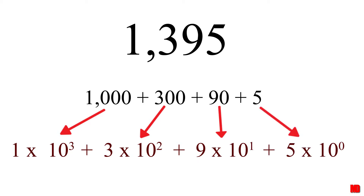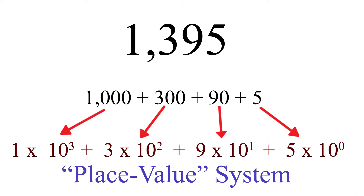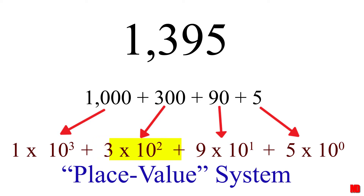Why am I making this easy number so hard to recognize? Well, what we have just done is define the place value system. The 1 is in the thousands place because we multiply it by 10 to the third, which is a thousand. 3 is in the hundreds place because it is multiplied by a hundred. 9 is in the tens place, and 5 is in the ones place because 10 to the zero power is 1.